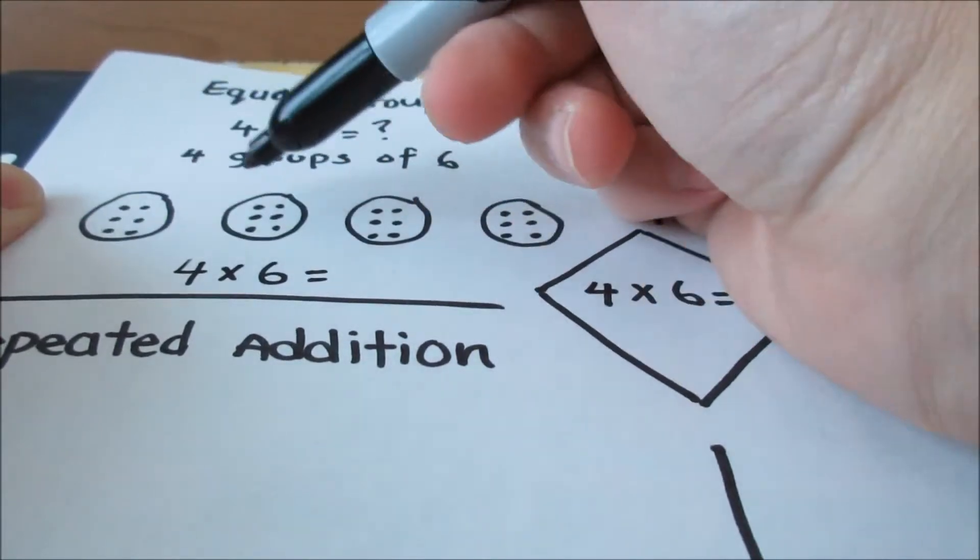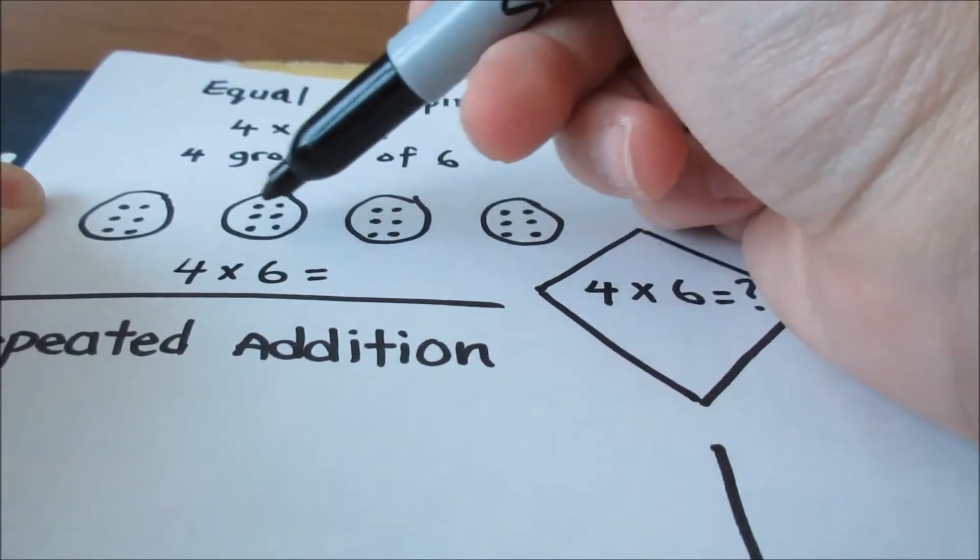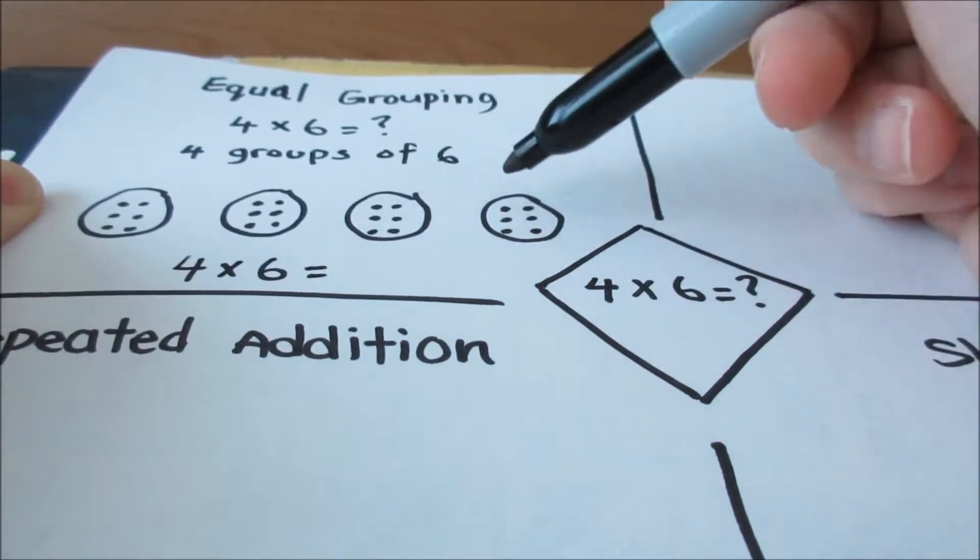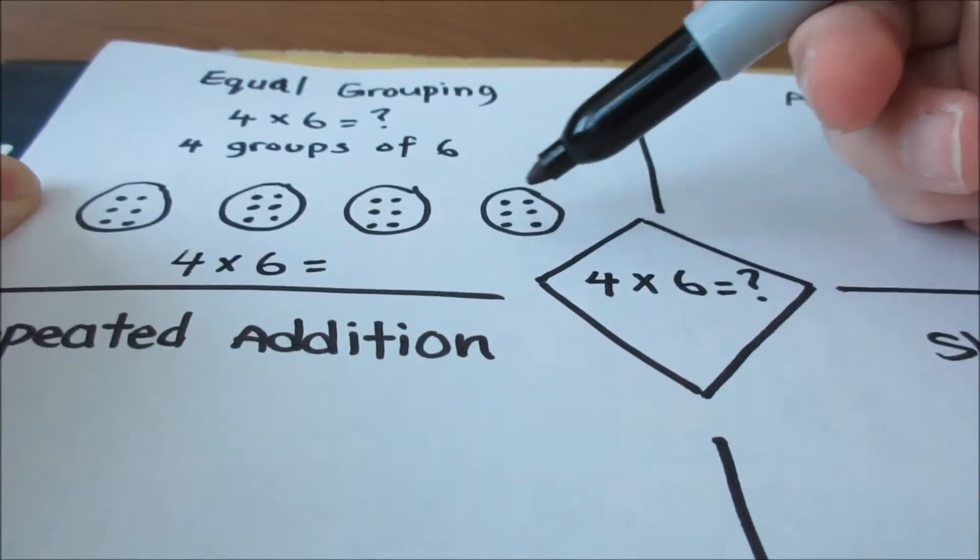1, 2, 3, 4, 5, 6, 7, 8, 9, 10, 11, 12, 13, 14, 15, 16, 17, 18, 19, 20, 21, 22, 23, 24.